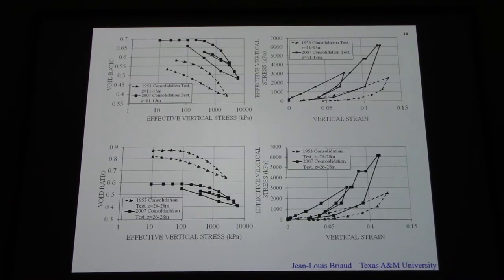You can see some of the index properties: the unit weight, water content, plasticity index quite high at the top. This is from borings done in 1953, and then we did some more recent borings with the help of Fugro in 2007. Water content and PI are approximately the same values. We also did some consolidation tests. You can see here void ratio versus sigma prime vertical effective stress on the log scale, the typical shape. The dotted line is 1953 and the black solid line is 2007.